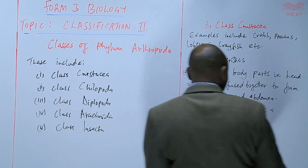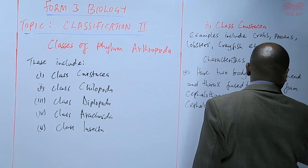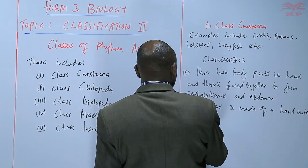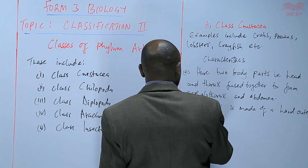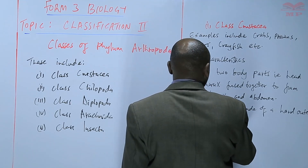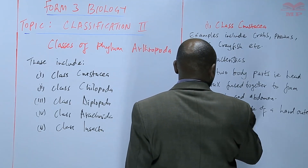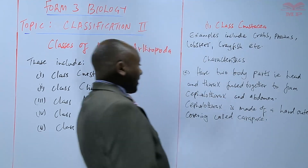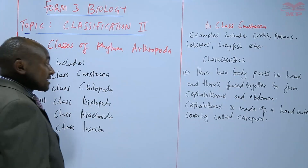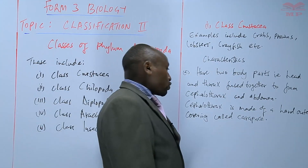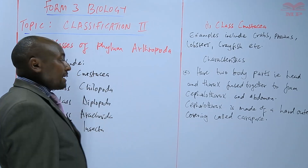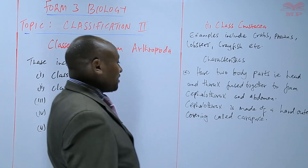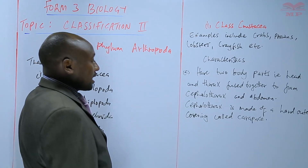The cephalothorax is made of a hard outer covering called the carapace. So the cephalothorax is enclosed by, or has a hard outer covering called, the carapace.